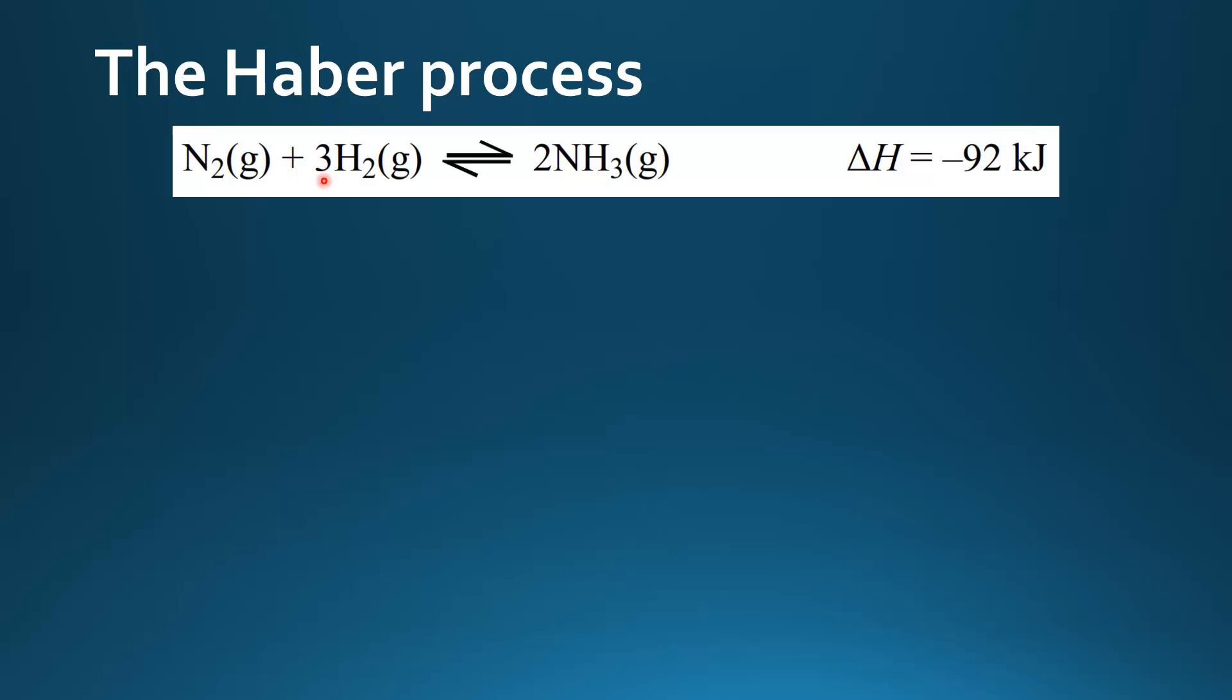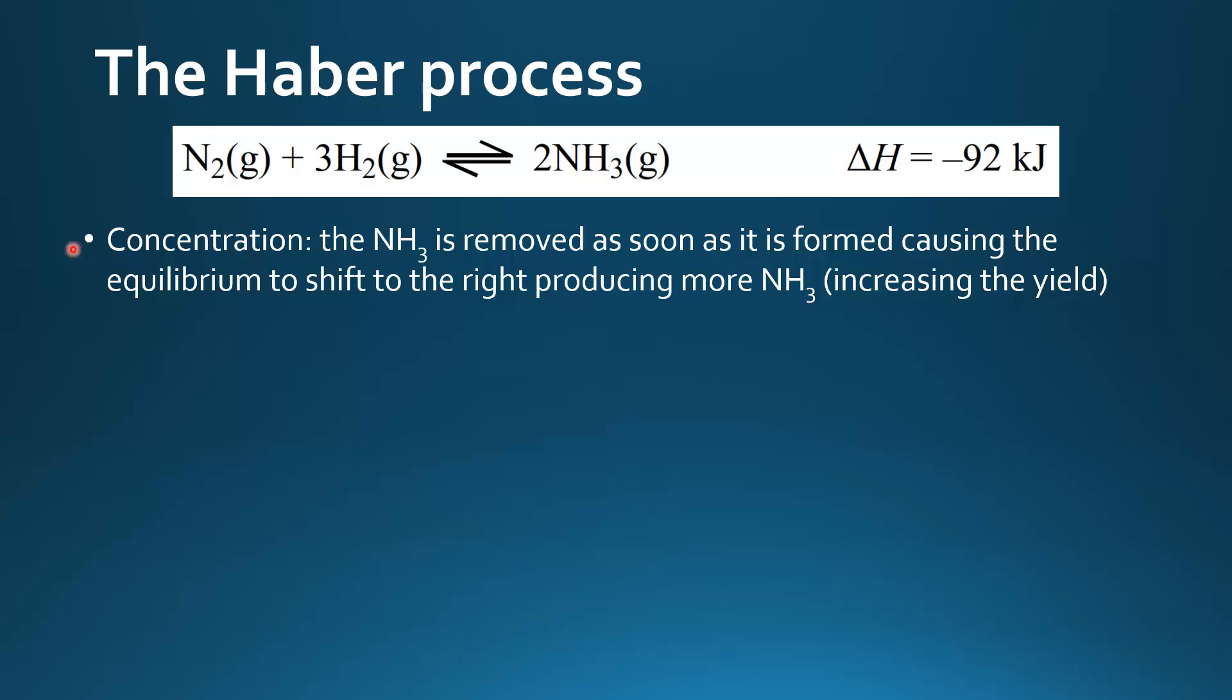Nitrogen reacts with hydrogen to form ammonia in a reversible reaction and the delta H for this reaction is negative so it's an exothermic reaction. Looking at the conditions for the reaction starting with concentration, the ammonia is removed as soon as it is formed causing the equilibrium to shift to the right producing more NH3 and that increases the yield.